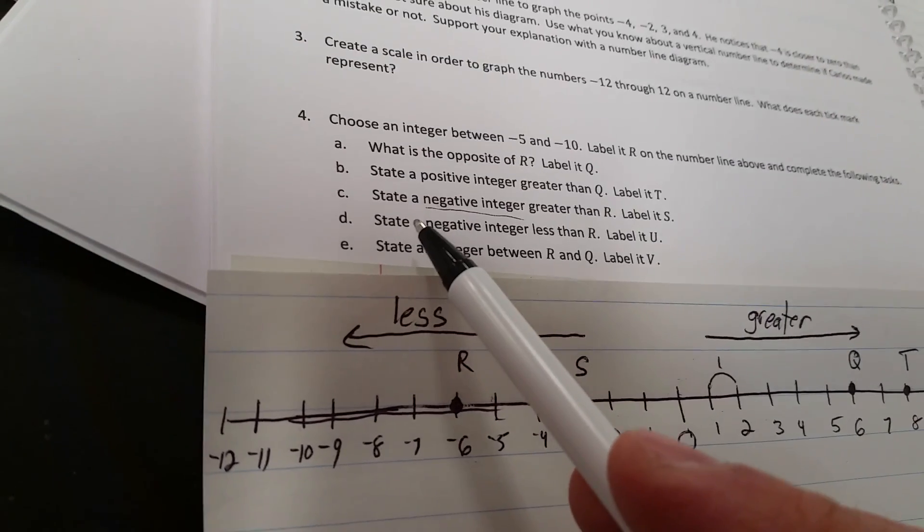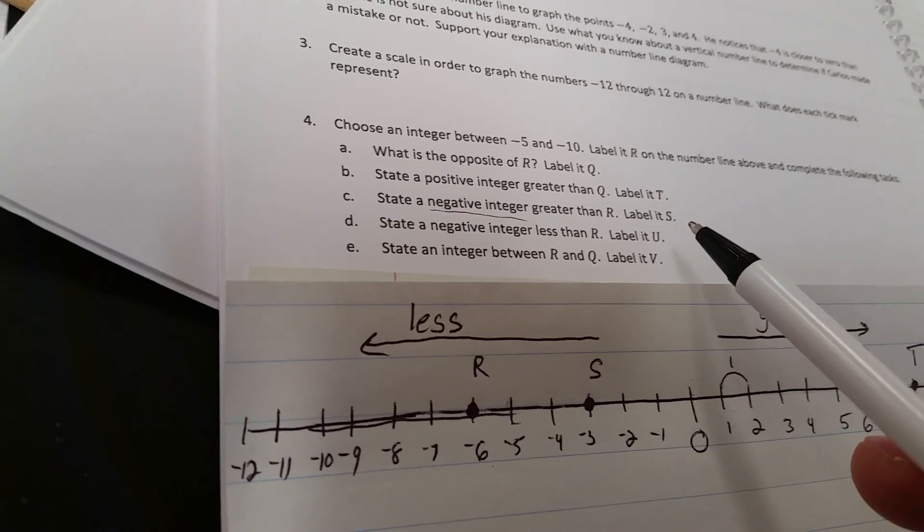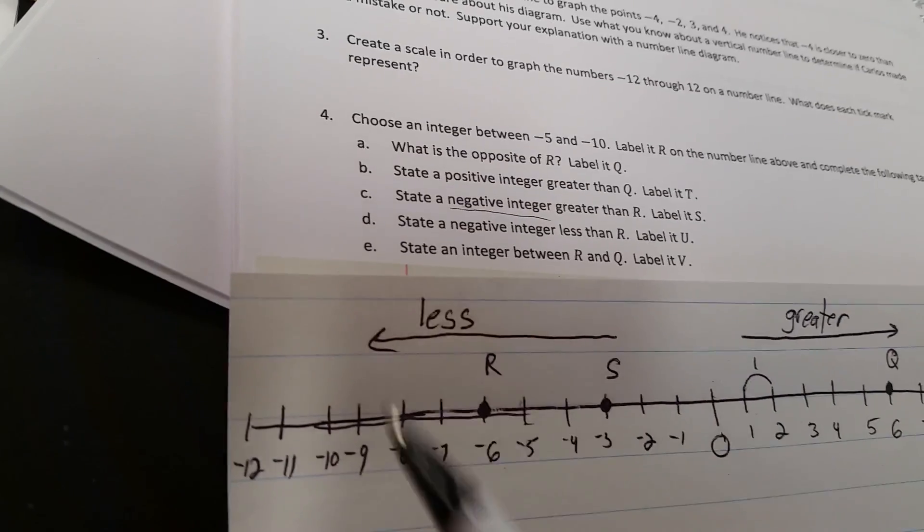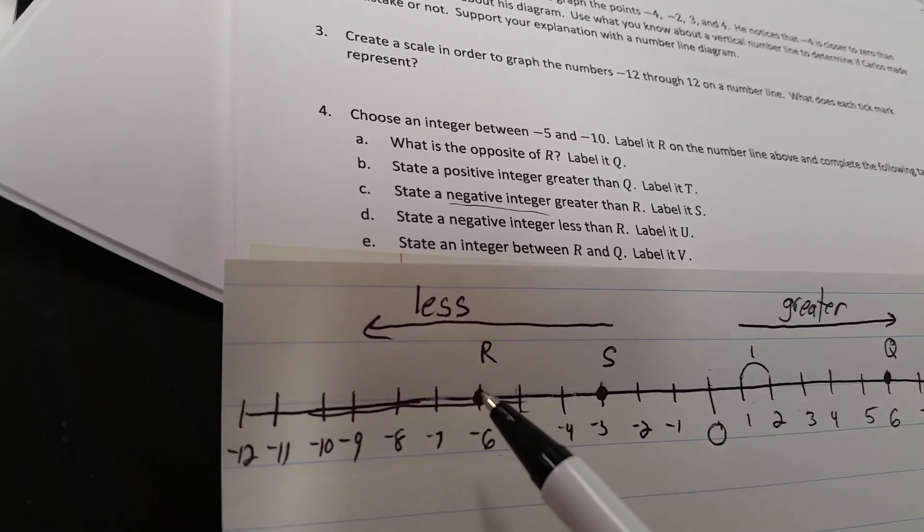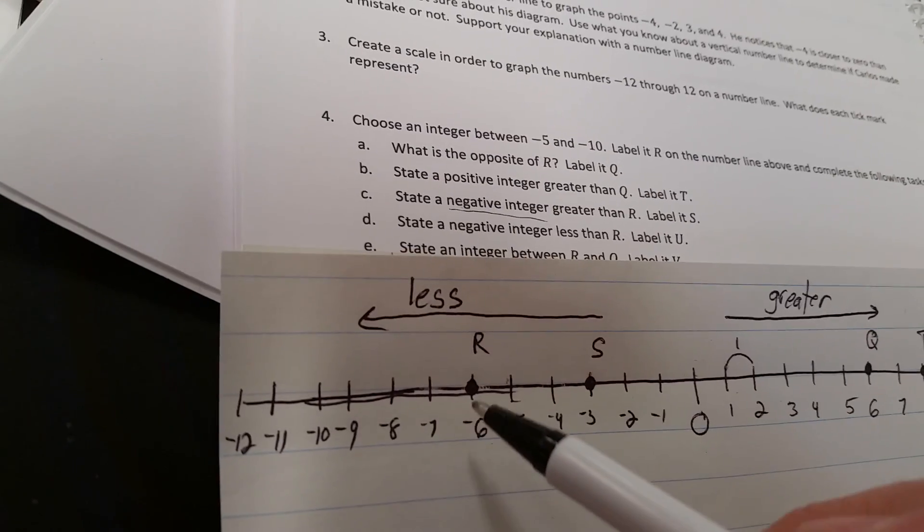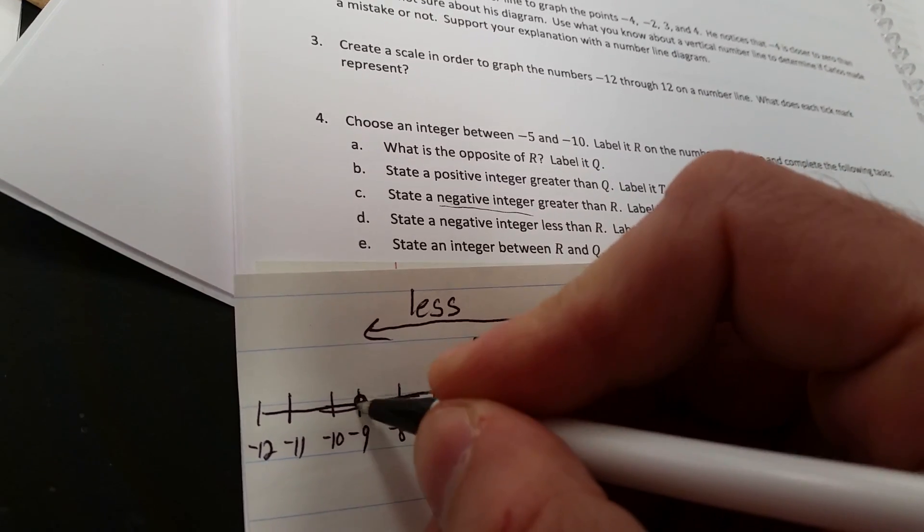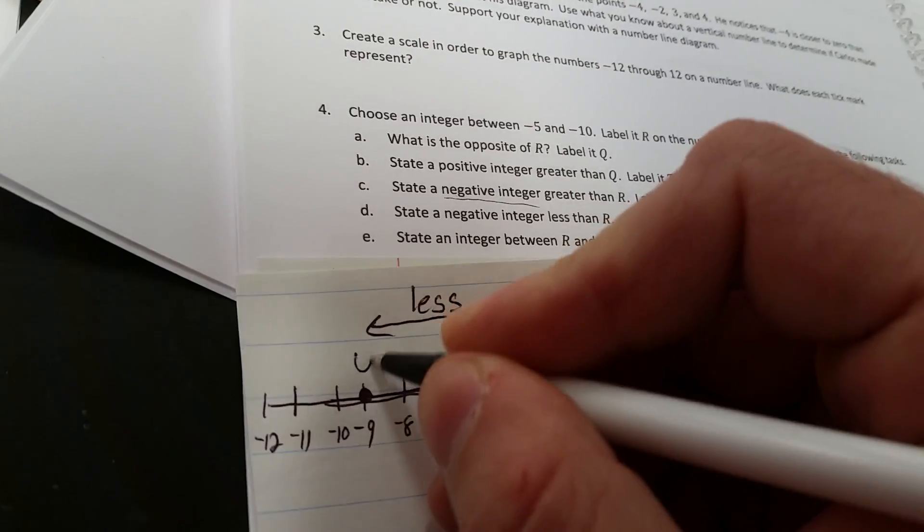All right, question D. It says state a negative integer less than r, and we're going to label that u. So again, for our values to be less than r, we're going to be moving and looking to the left of this point. So to the left of r, we have a couple of choices. I'm going to choose negative 9. That's going to be u.